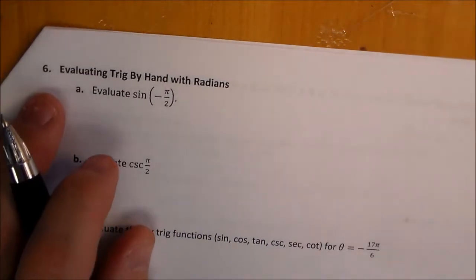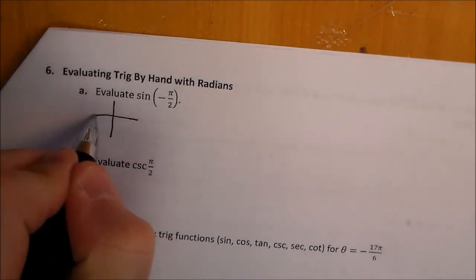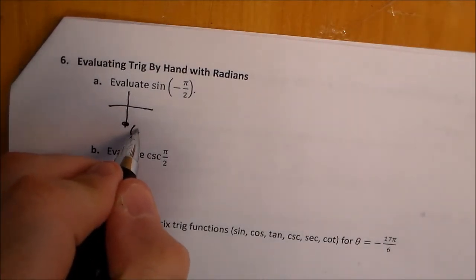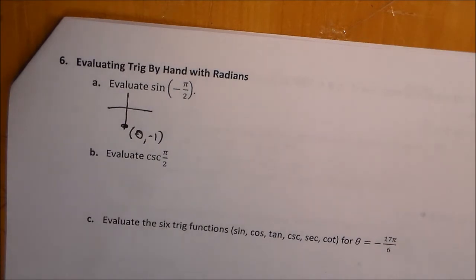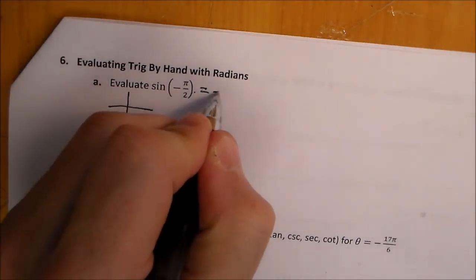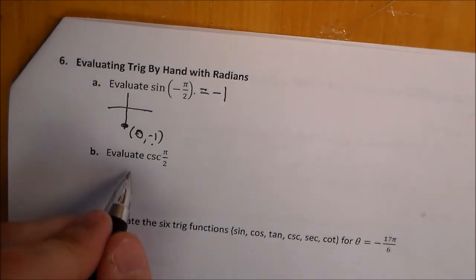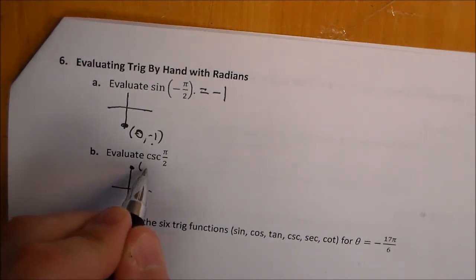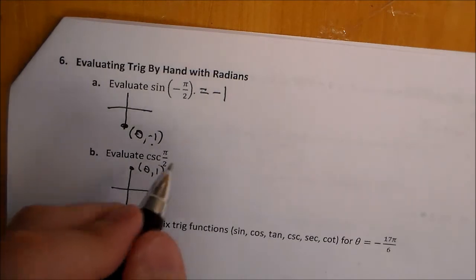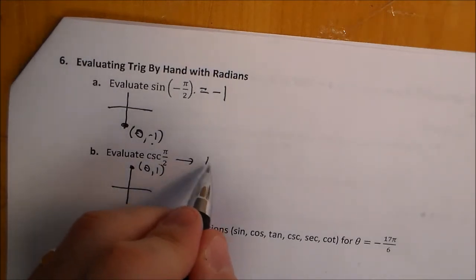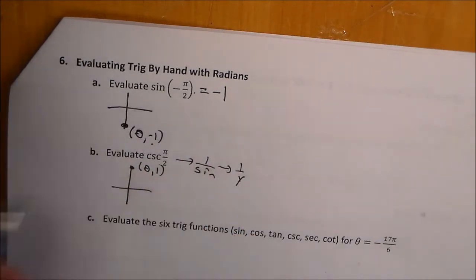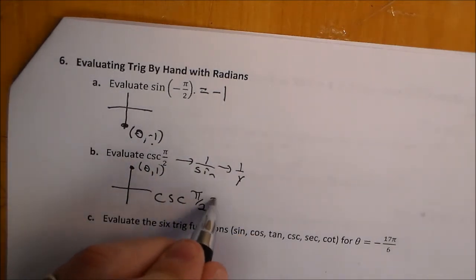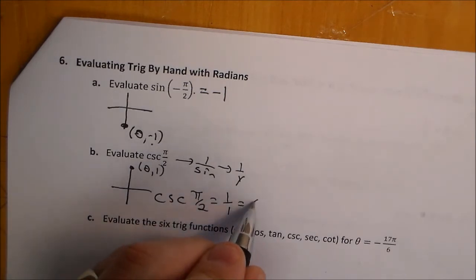Sine of negative π over 2: negative π over 2 is on the y-axis with coordinate (0, negative 1). Since sine is the y-value, the answer is negative 1. For cosecant of π over 2, we're at (0, positive 1). Cosecant is the reciprocal of sine, so it's 1 over the y-value: 1 over 1, which is 1.